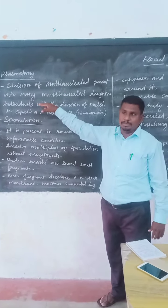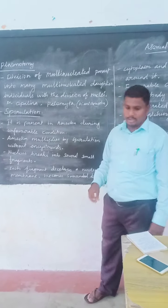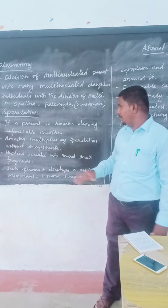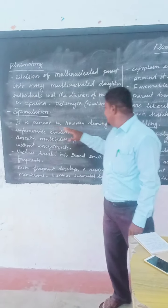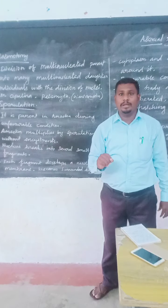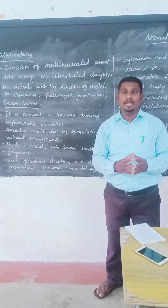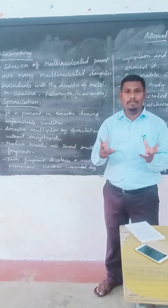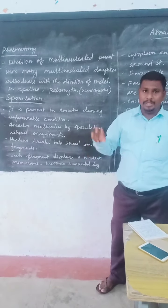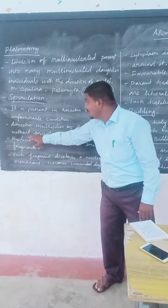Next is spore formation. It is seen in Amoeba during unfavorable conditions. Unfavorable condition is an increase in the amount of temperature. At that time, the Amoeba cannot survive. Under unfavorable conditions, Amoeba multiplies by spore formation.